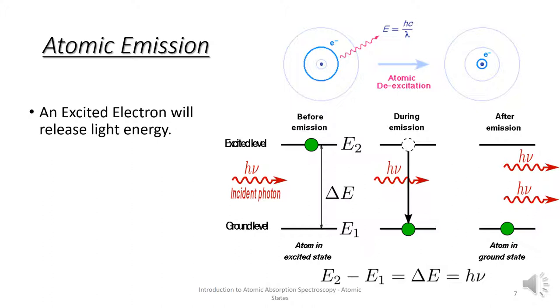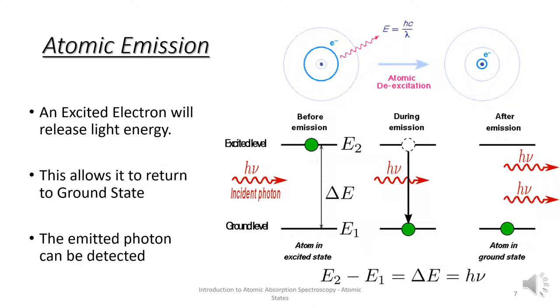This excited electron will eventually release its light energy, returning to the ground state and the emitted photon can be detected.